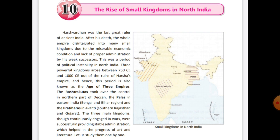Lack of proper administration means the rulers could not organize and supervise their work properly — their policies were not well organized. The third reason was weak successors of Harsha. The next rulers of the Vardhan Empire were weak and incapable; they could not succeed in saving it. So due to weak successors, other people got the opportunity and started establishing their own kingdoms.